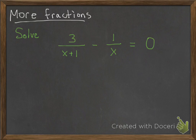So now here's another one I want you to try. This one's a little harder. Solve 3 over x plus 1 minus 1 over x equals 0. So one thing you can do is you can move the 1 over x to the other side and then cross multiply. If you want to try that, that's definitely good to do.